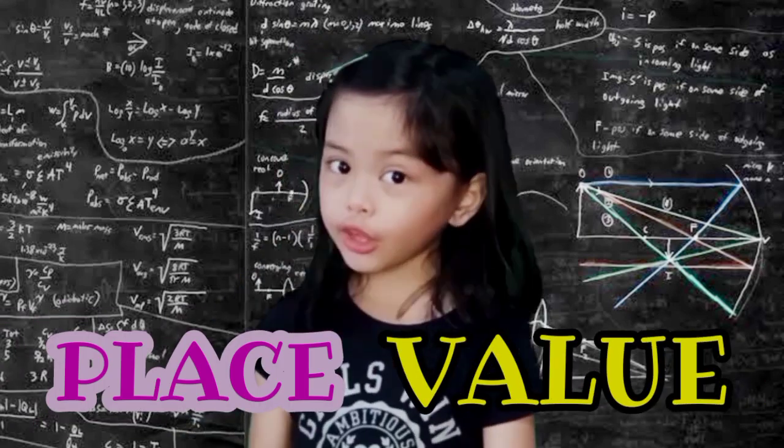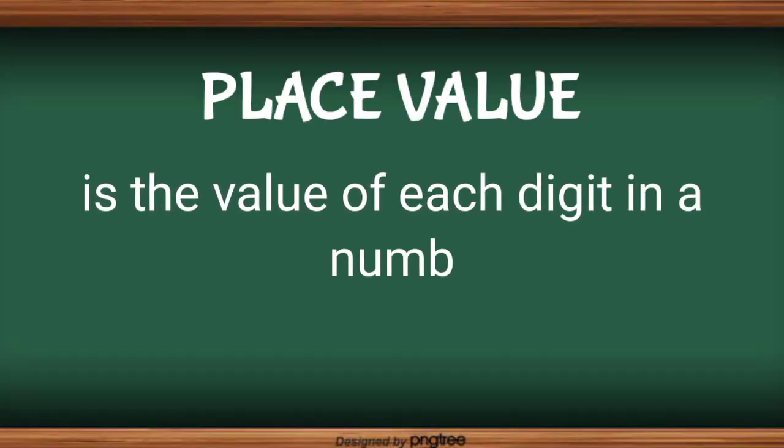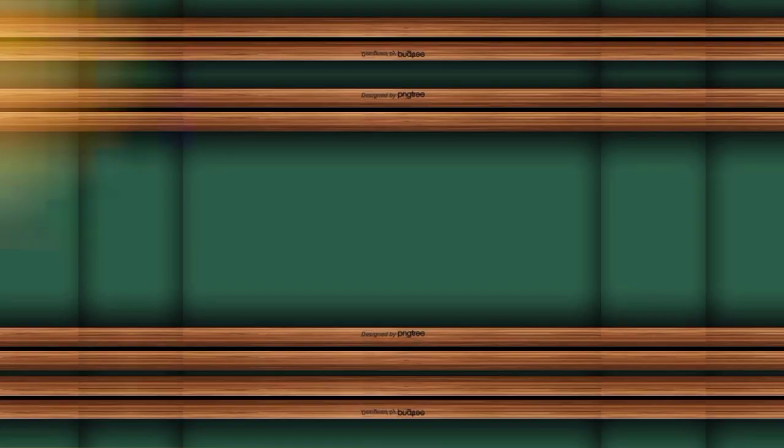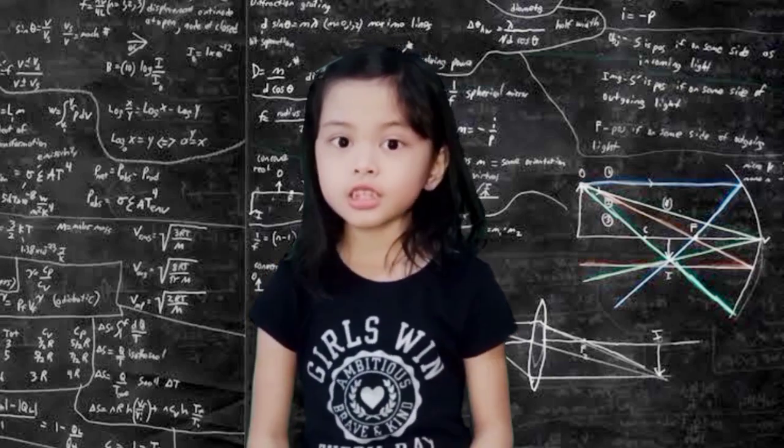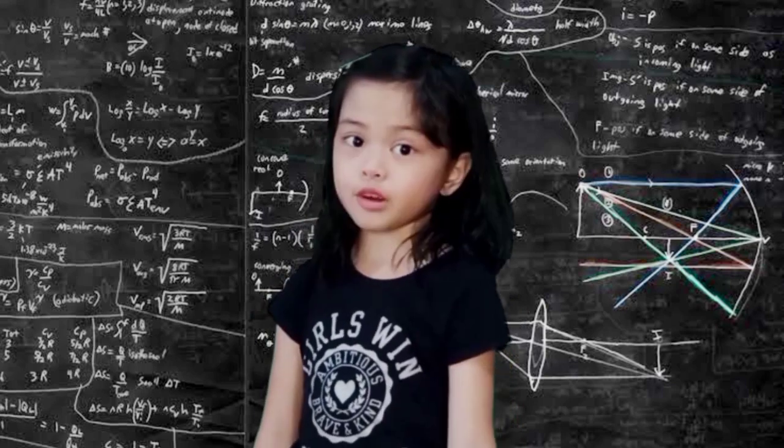But what does place value mean? A place value is the value of each digit in a number. Remember, a digit can be the same, but its value depends on where it is in the number.